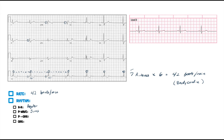Again, we've got our P and our QRS and our T. So you can see here that this is actually definitely having AV association. So we have AV association because we know that there's a QRS wave for every P wave.